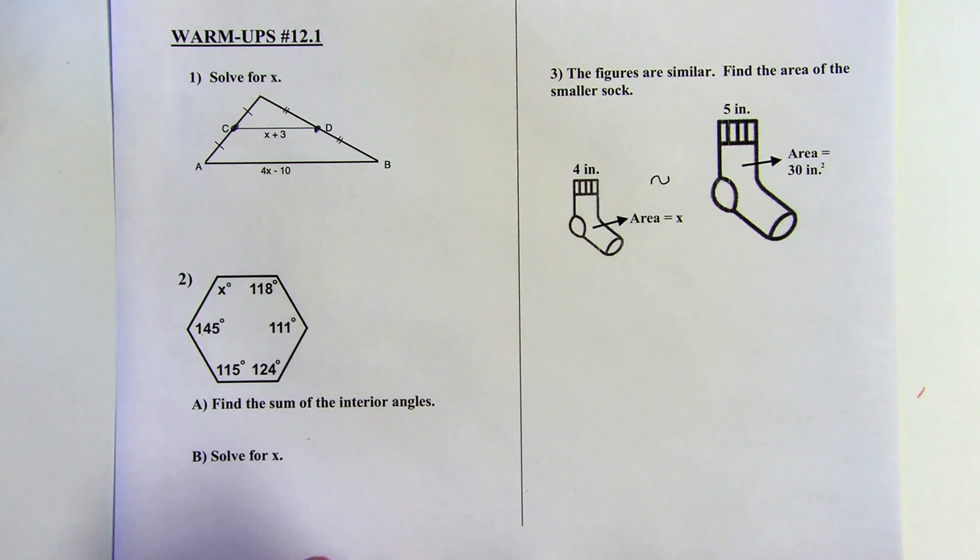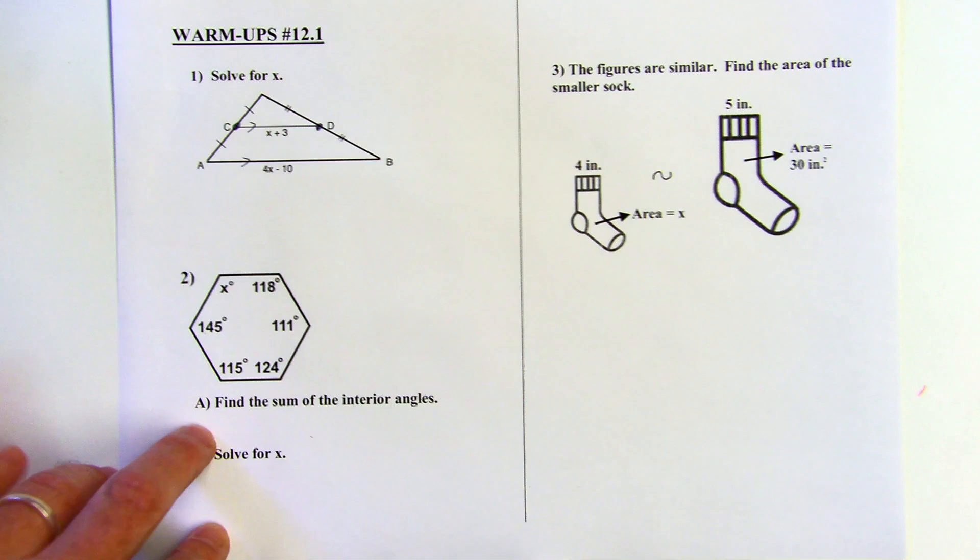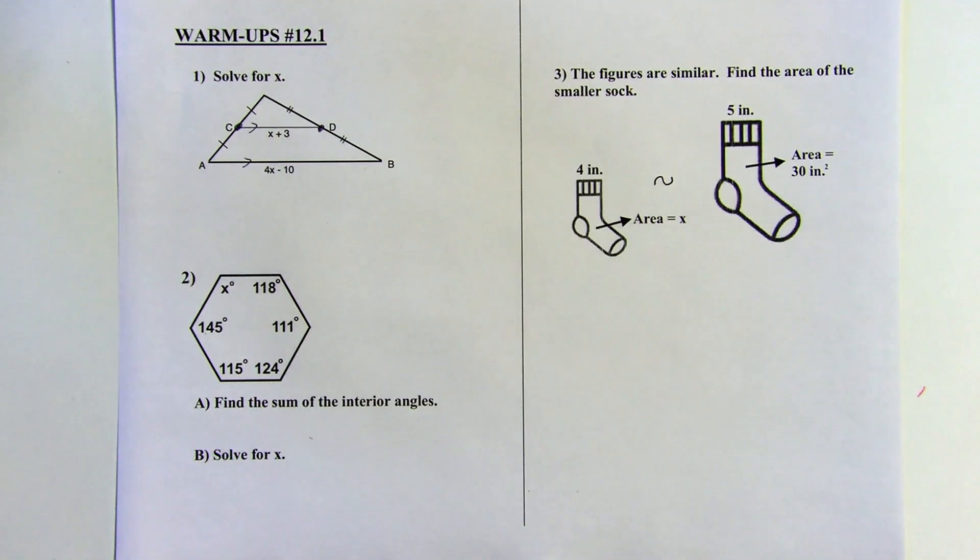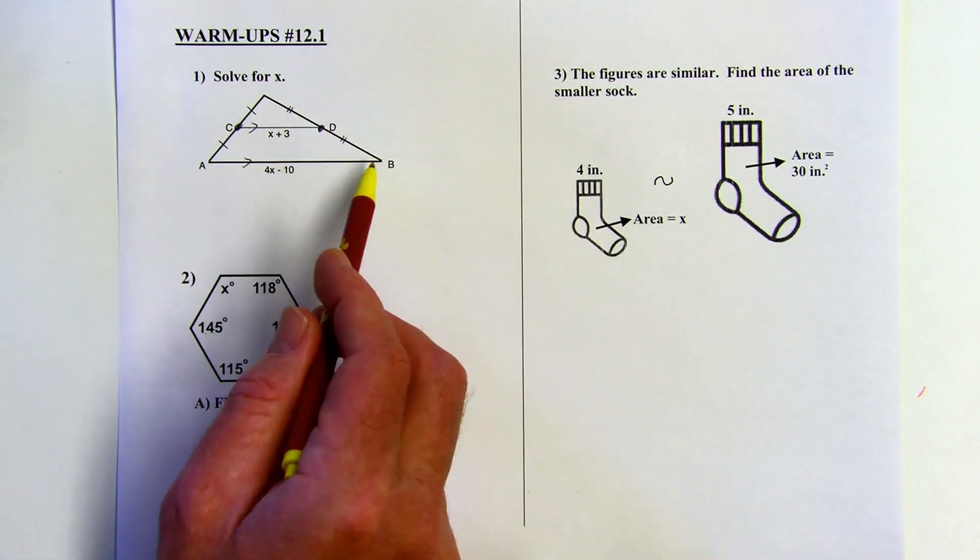And there's two things that are true about a mid-segment of a triangle. One, it's going to be parallel to one of the sides. So those two sides are parallel, which doesn't actually help me solve for X here. But the other thing that's true, this mid-segment is going to be half the length of the bottom of the triangle.